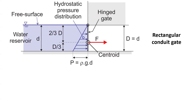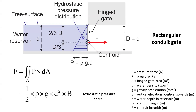The force acting on the gate can be derived by summing all the small contributions of the pressure force on small areas of the gate. Mathematically, the pressure force is the integration of the pressure over the area A of the conduit. Assuming a rectangular conduit gate of breadth B, by integrating the triangular hydrostatic pressure distribution we obtain the hydrostatic pressure force equal to half of rho g d squared times B.